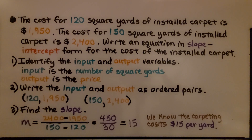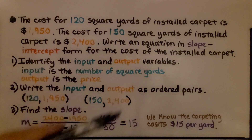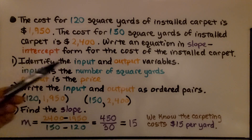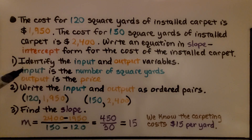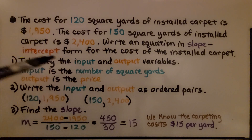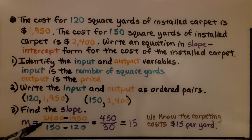The cost for 120 square yards of installed carpet is $1,950. The cost for 150 square yards of installed carpet is $2,400. Write an equation in slope-intercept form for the cost of installed carpet. We identify the input and output — they're color coded. The input is the number of square yards and the output is the price. Our two ordered pairs are (120, 1950) and (150, 2400).